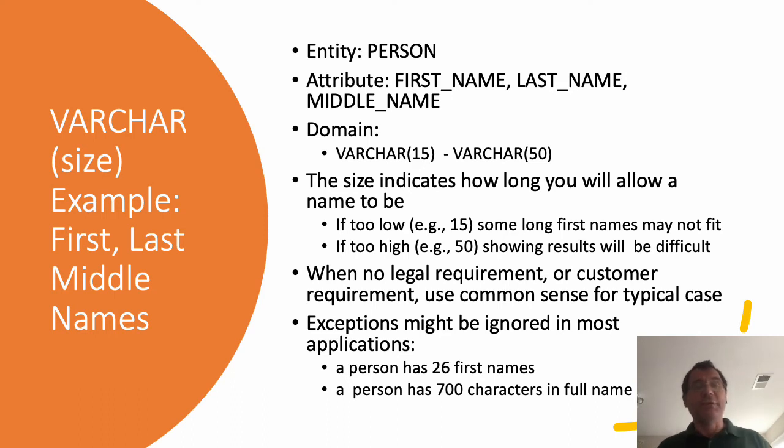While 50 might be a little bit too high because if we want to show a column or some table display with all the values, this will make the table pretty wide. Now sometimes we want to keep the full first name. So from a legal perspective we might want to go to a very big value. Now also there are some exceptions. There are some persons who just wanted to make fun and put very long first names to their name. There was a person with 26 first names. There is another person that has over 700 characters in the full name. So in that case you may make exceptions. So you don't need to take care of each and every situation.